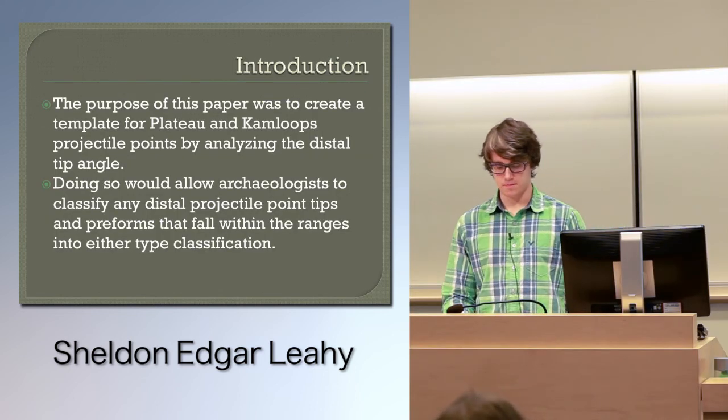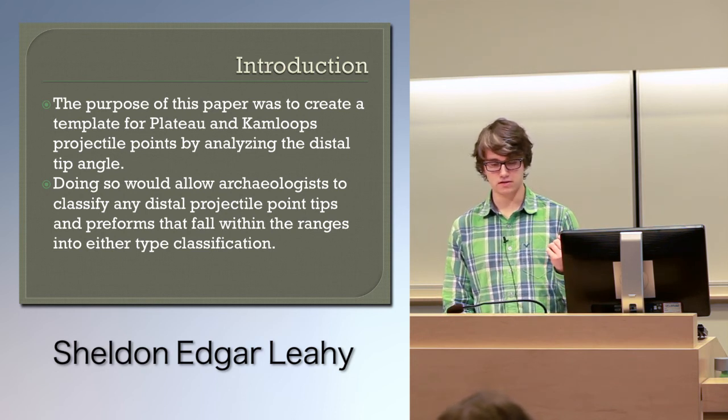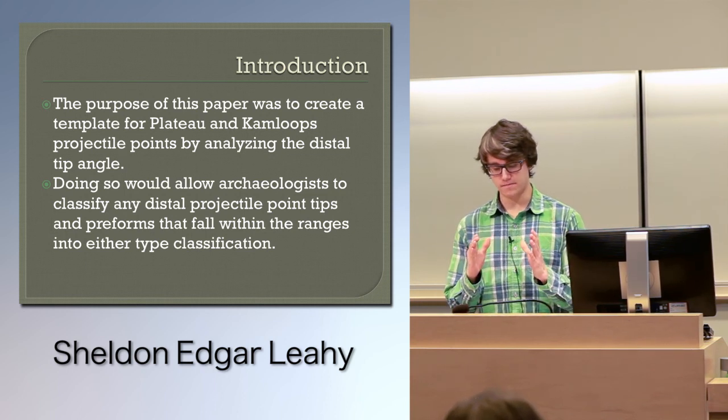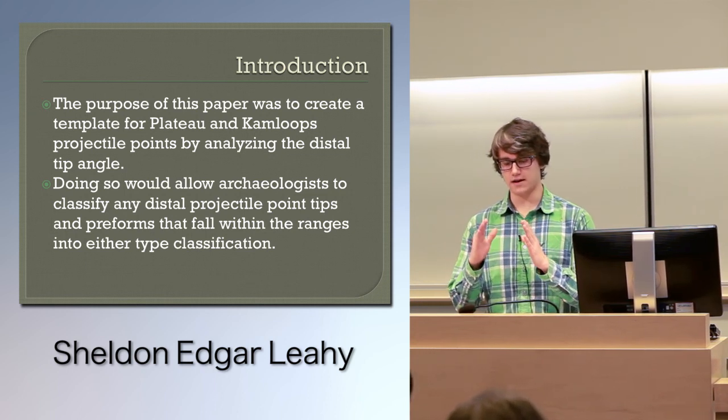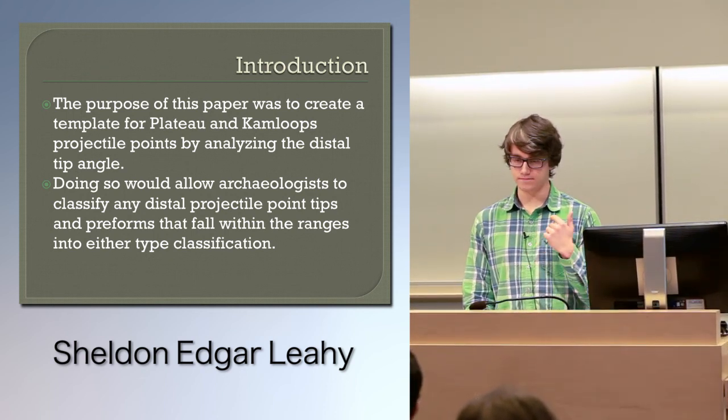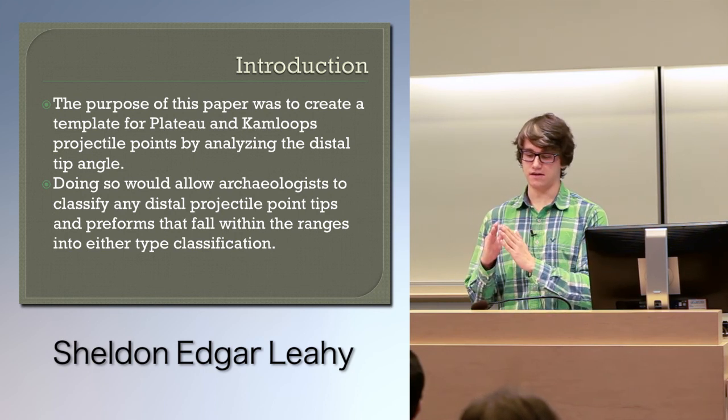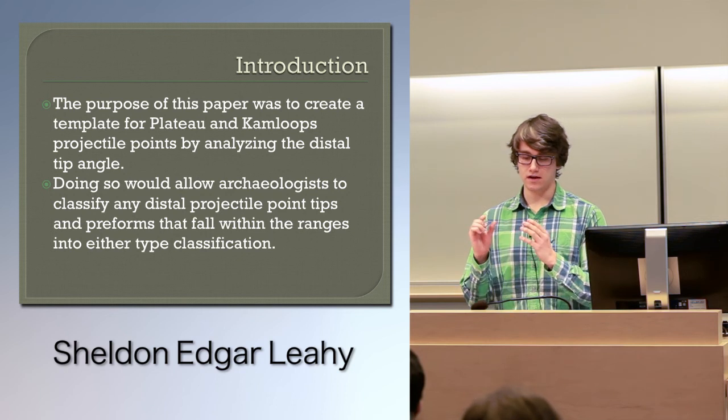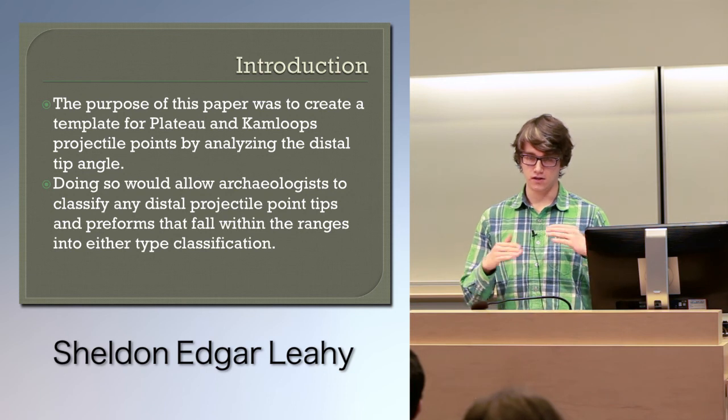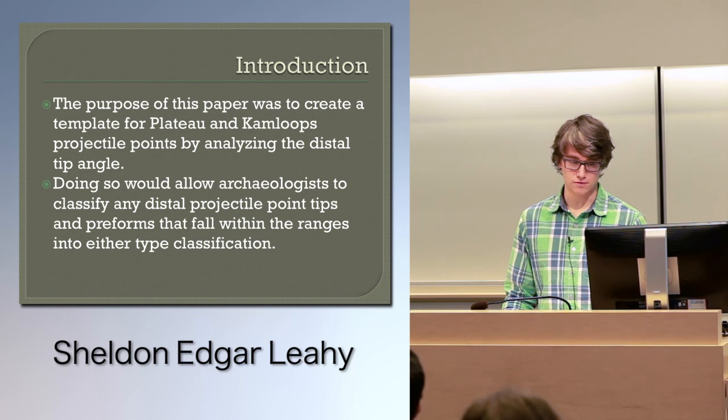The purpose of this was to see if I could create a template from comparing the Kamloops projectile point to the plateau projectile point, and if I could see if there's a range of degrees to whatever angle it was. Then from that, I could look at preforms or tip fragments. You could clearly say if this tip or preform falls into the Kamloops range or the plateau range, and then from that, I could date. You can date the stratigraphic layers you find the angle in or the fragment or the preform.